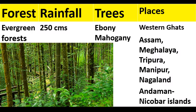Now let us know each type of forest. First, evergreen forest receives 250 centimeters and more rainfall. Ebony, mahogany, rosewood, and rubber trees are found here. They are found on the western side of the Western Ghats, Assam, Meghalaya, Tripura, Manipur, Nagaland, and Andaman and Nicobar Islands.